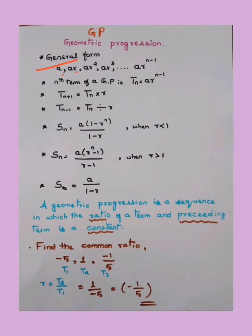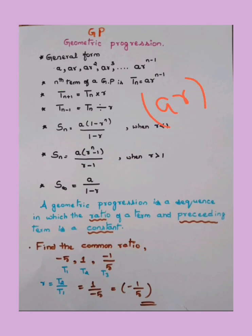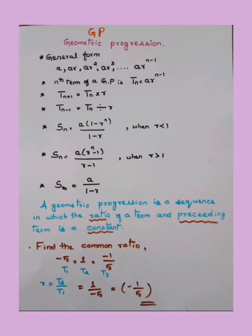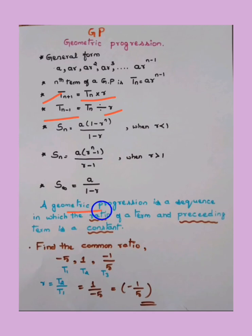Coming to Geometric Progression, the general form is: a, ar, ar², ar³, ..., ar^(n−1). This is the general form. To calculate the nth term for GP: Tₙ = a·r^(n−1). Don't put the bracket around 'ar' together — the power applies only to r. To calculate the next term Tₙ₊₁, multiply by r; for the preceding term, divide by r. GP is a sequence in which the ratio of a term and its preceding term is constant.